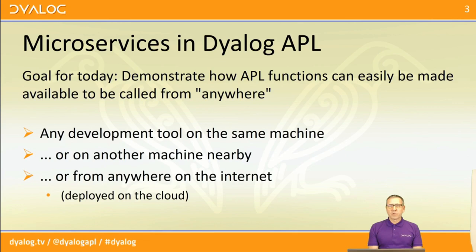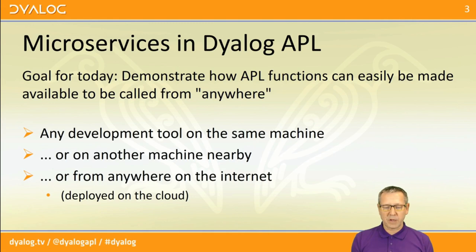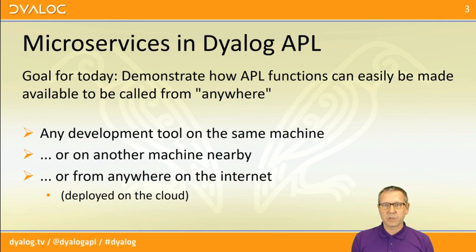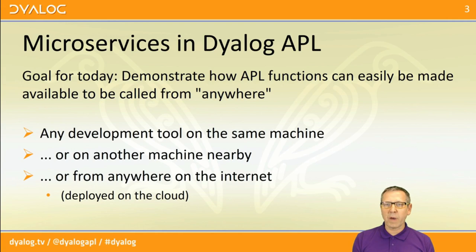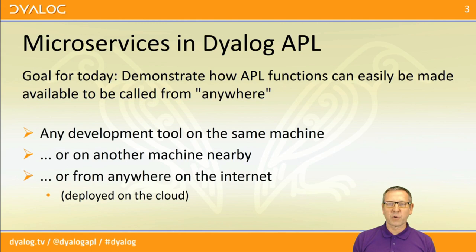What we're going to try and do in the next 60 minutes or so is to show you a way to make your APL functions easily available to be called from anywhere — specifically any development tool running on the same machine, whether C#, JavaScript, Python, or whatever. The same should be true if you're running on a nearby machine or anywhere on the internet. We're going to end by deploying the application to the cloud and show you that you can still call the functions when it's running there.